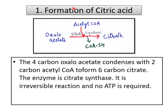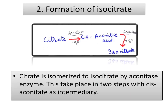Now we start with the TCA cycle. The first step is the formation of citric acid. Oxaloacetate, which is a 4-carbon compound, reacts with acetyl coenzyme A and coenzyme A is removed to create citrate. So oxaloacetate, a 4-carbon compound, is converted to the 6-carbon citrate or citric acid, in the presence of the enzyme citrate synthase. No ATP is required for this step.